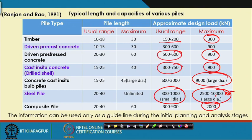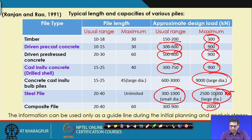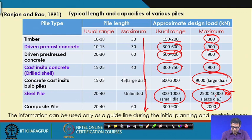The driven precast cast pile also takes a maximum of 900 kilo Newton with a probable range of 300 to 600 kilo Newton. These represent the probable pile length and load ranges for different pile types.